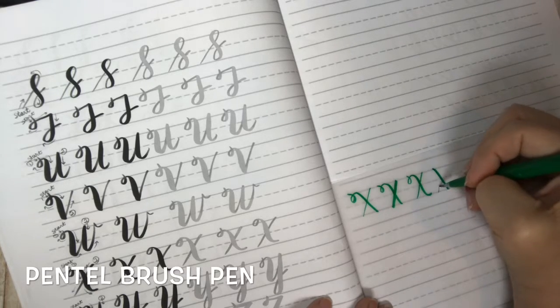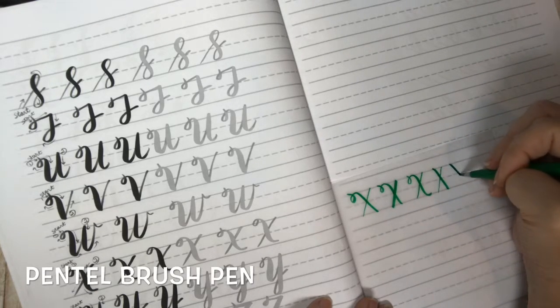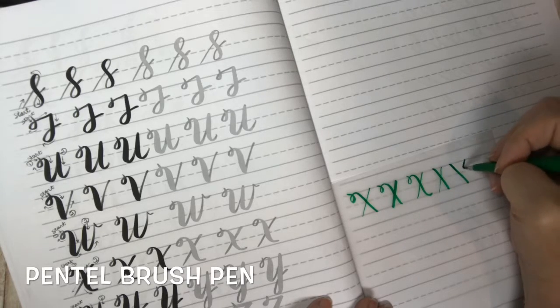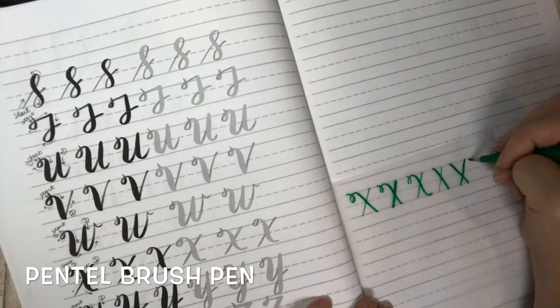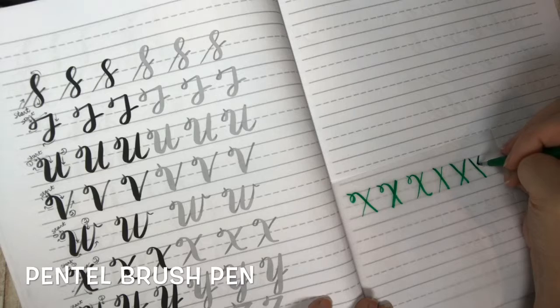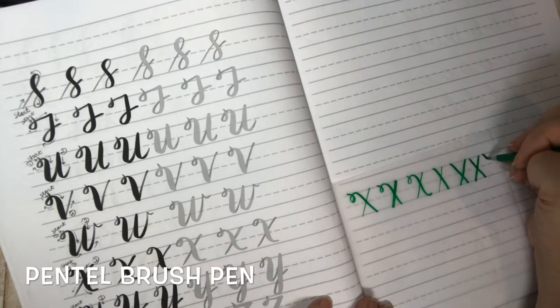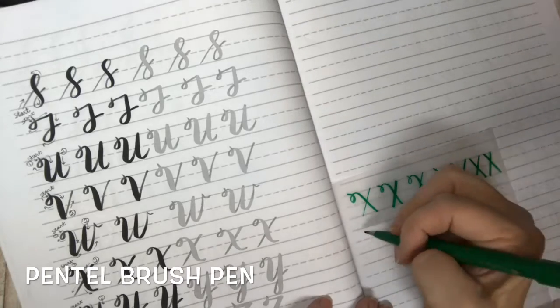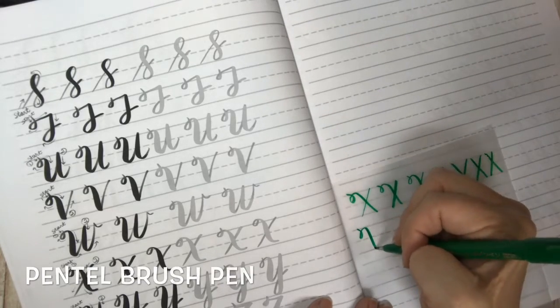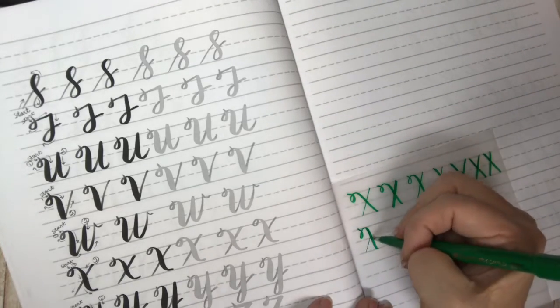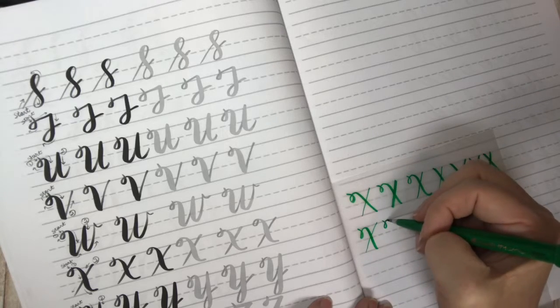And of course you can always just do a regular X. You can make it cross more towards the bottom, you can make it cross more towards the top, so that was in the middle. It's up to you, do it at an angle.